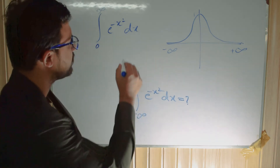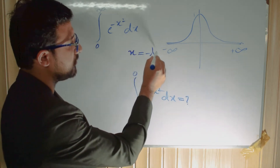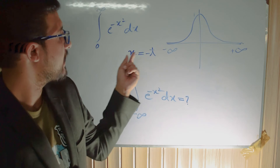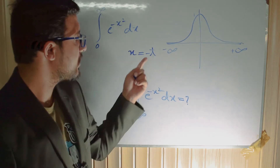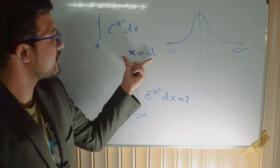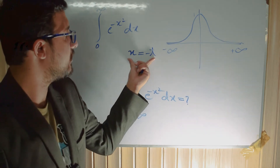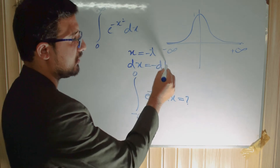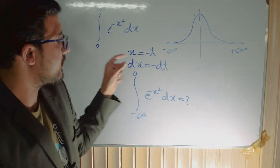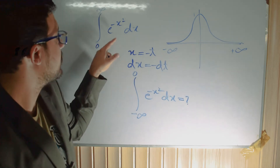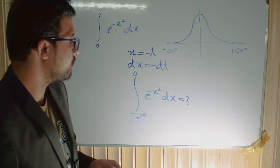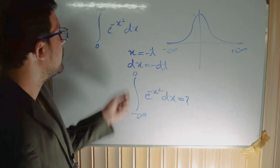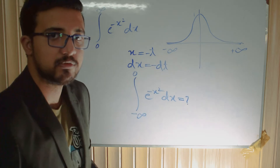In order to evaluate this integral, we have to change our limit from plus infinity to minus infinity. To do this, we substitute x equal to minus t. As x approaches 0, t approaches 0, and as x approaches plus infinity, t approaches minus infinity. So this limit x equal to 0 gives t equal to 0, and x equal to plus infinity gives t equal to minus infinity.